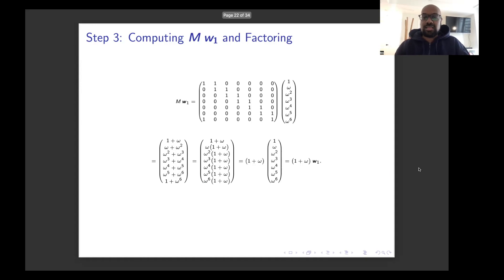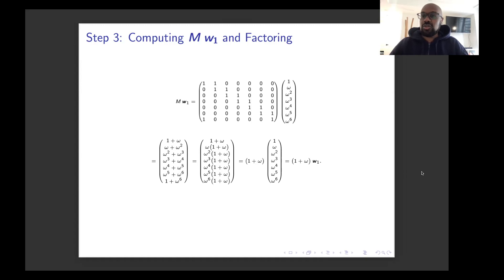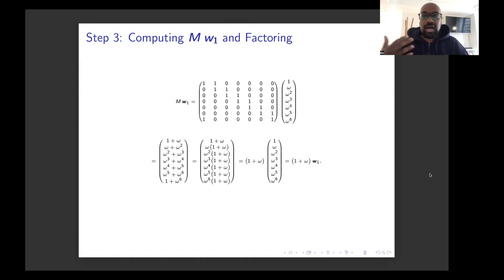We take the common factor of 1 plus omega out and recover exactly the original vector we had. So here is an eigenvector whose eigenvalue is 1 plus omega — a very cool way to find an eigenvalue using the cyclical nature of this matrix.